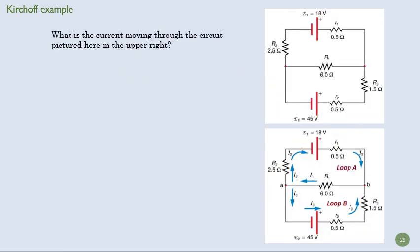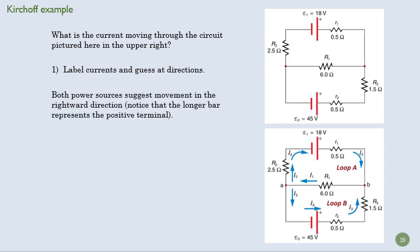Let's solve a problem. Let's look at this guy right here. We've got two battery sources and then a number of different resistors and some internal resistance. We want to know what the current is in this circuit. So we label the currents and we guess at directions. I'm going to just guess that the current is going to be going this way because our battery is going to be pushing it that way.